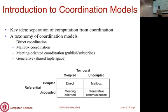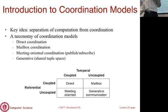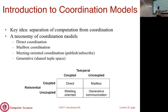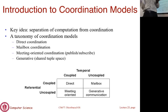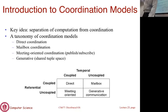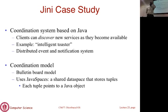The most general, loosest form of coordination is decoupled in both space and time. You send messages; delivery takes place at a later time; and when you send the message you don't even know who the intended recipient will be. You have to ask: what's the purpose of sending a message when you don't know who will receive it or when? What kinds of applications are useful in this scenario?